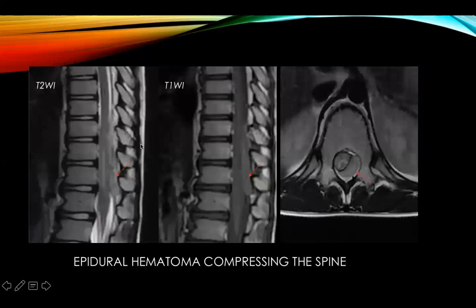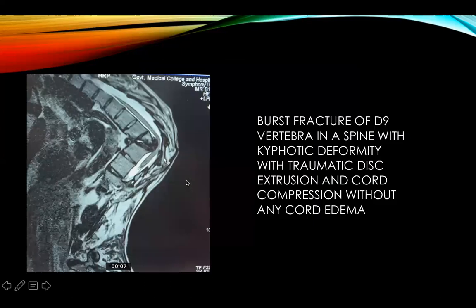This case shows an epidural hematoma causing compression of the cord. The next case involves a kyphotic spine following trauma, with a burst fracture and traumatic disc extrusion compressing the cord, but with no associated signal abnormality within the cord.